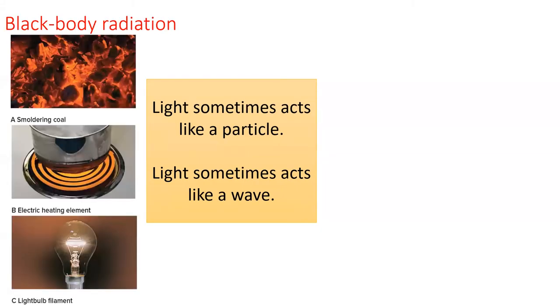The first is called black body radiation. As we heat an object, it starts to emit light. The hotter the object is, the higher the frequency of emitted light. The color of the light and the amount of light coming from the object cannot be explained using wave-based physics.